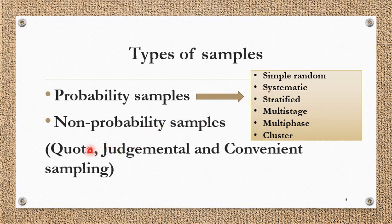Non-probability samples are basically divided into quota, judgmental, and convenient sampling — not based on randomization. For example, in some institutions with a 15% management quota for admissions, we divide students based on quotas and 15% of sampling is done from that quota. Judgmental sampling is when, for a study on diabetic patients, you define a population based on your judgment and certain predefined criteria. Convenient sampling is when, instead of contacting every student across India, you conveniently take students from Indore.